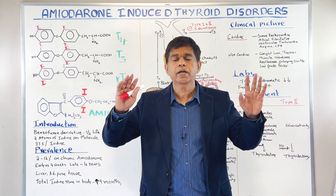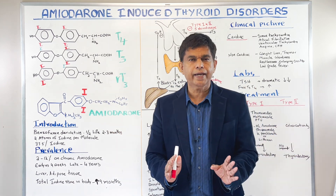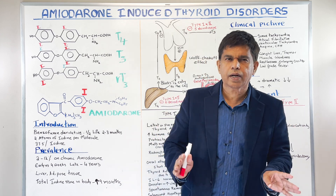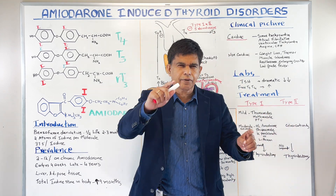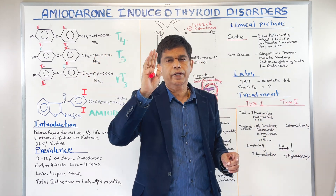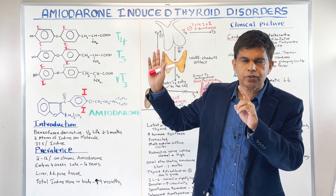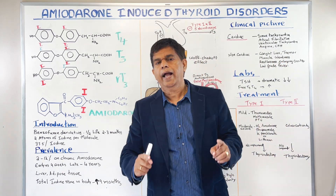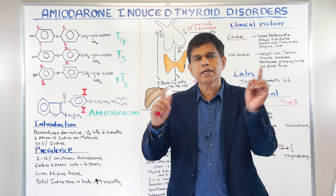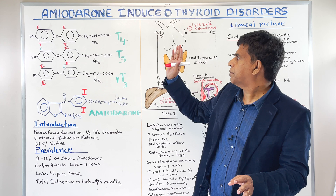We've been doing a series of lectures on endocrinology. We covered the posterior pituitary and the anterior pituitary and a very important hormone. We've been going over a lot of lectures on thyroid hormone. Today we are here on amiodarone-induced thyroid disorders. We're going to talk about amiodarone-induced thyroid toxicosis today. So let's start our presentation.